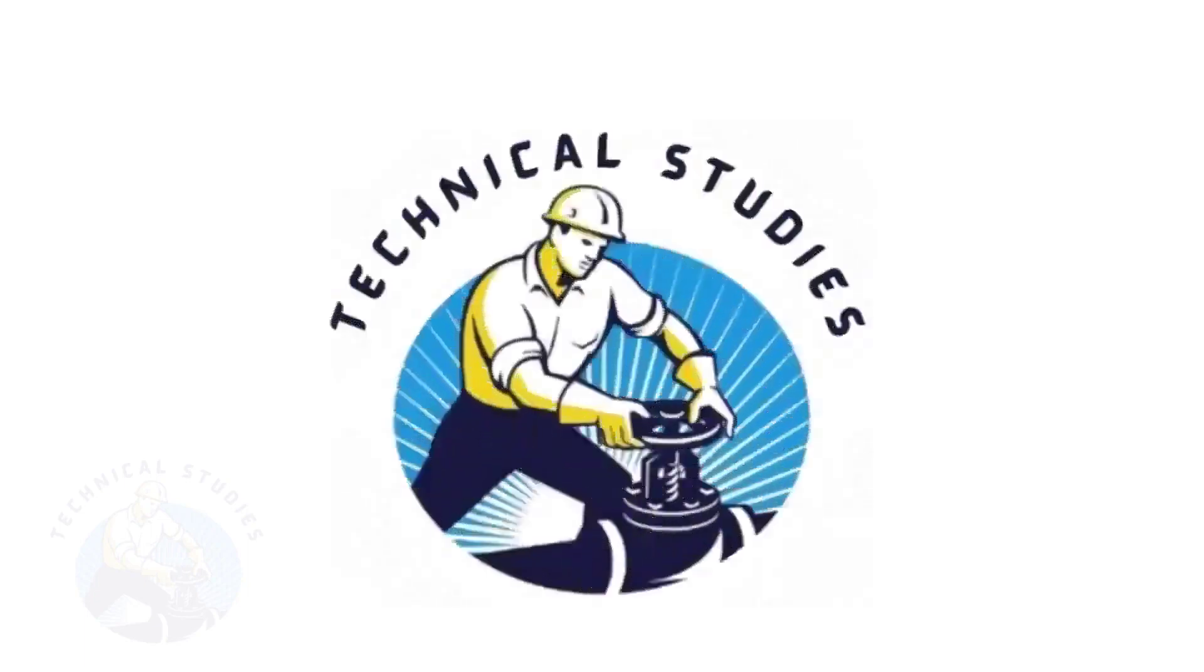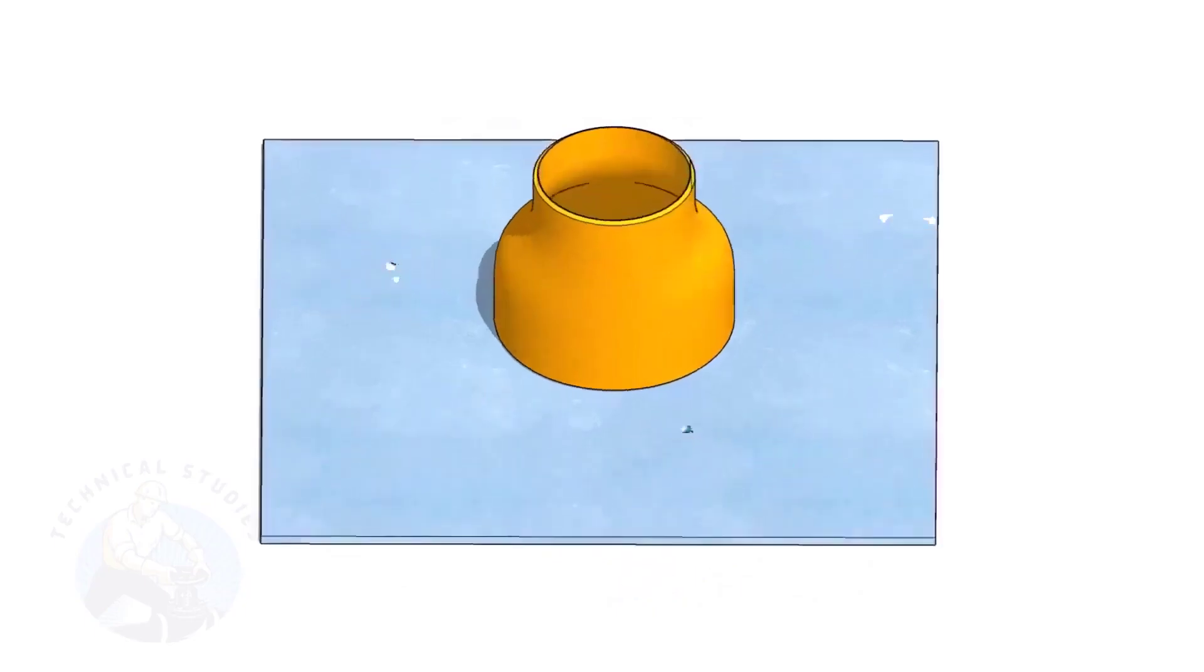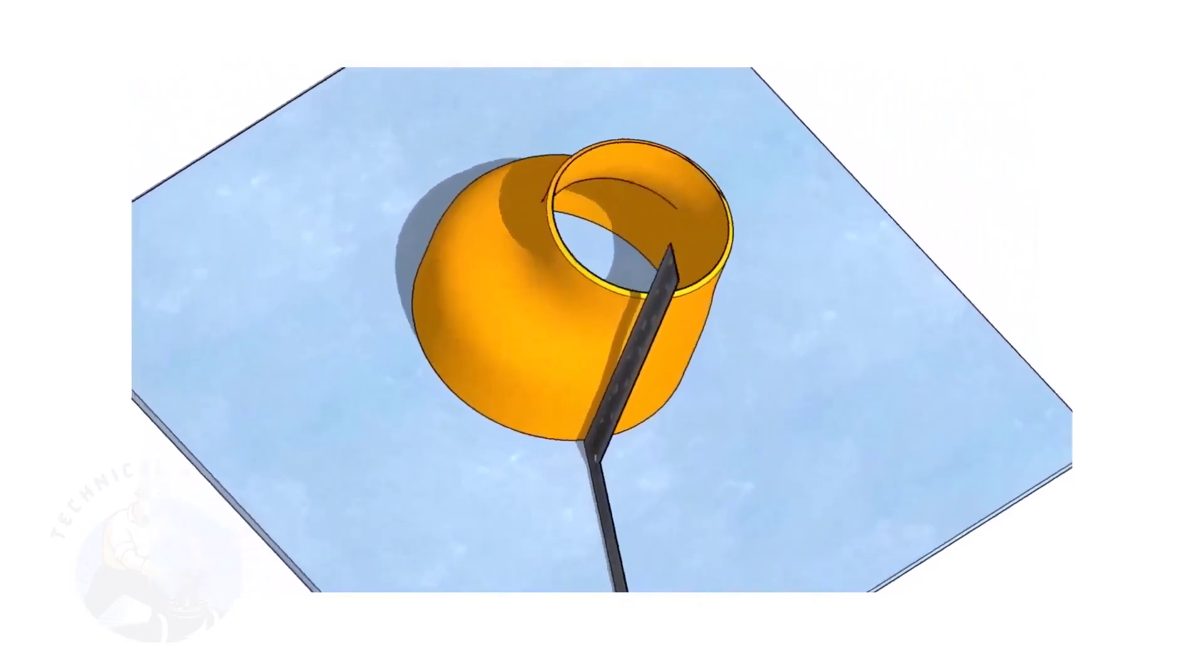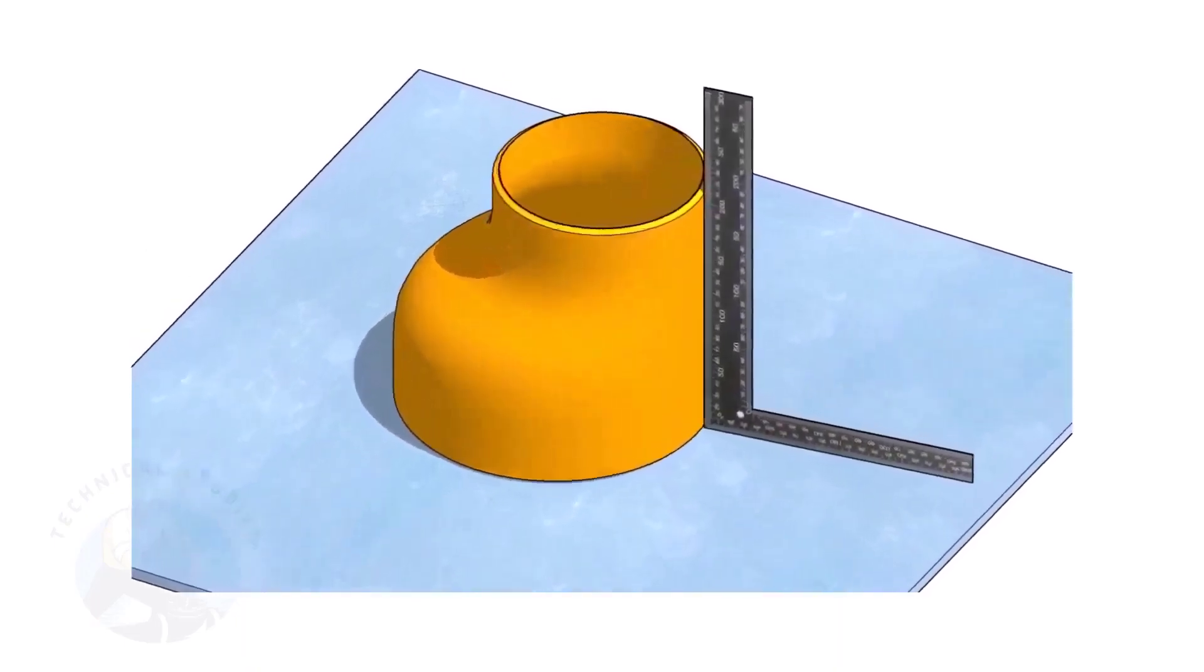Welcome to Technical Studies. Fitting an eccentric reducer to a pipe that is already fitted to another fitting like a flange,